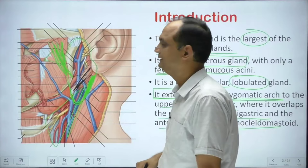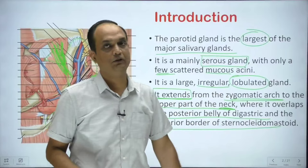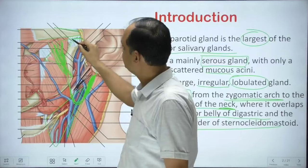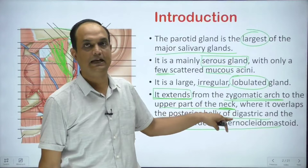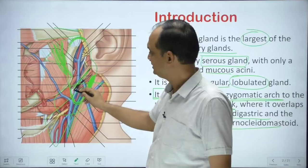The parotid gland extends from the zygomatic arch and enters into the upper part of the neck, reaching into the upper part of the carotid triangle. It overlays the digastric muscle and the sternocleidomastoid muscle. These are the two muscles it overlaps inferiorly.